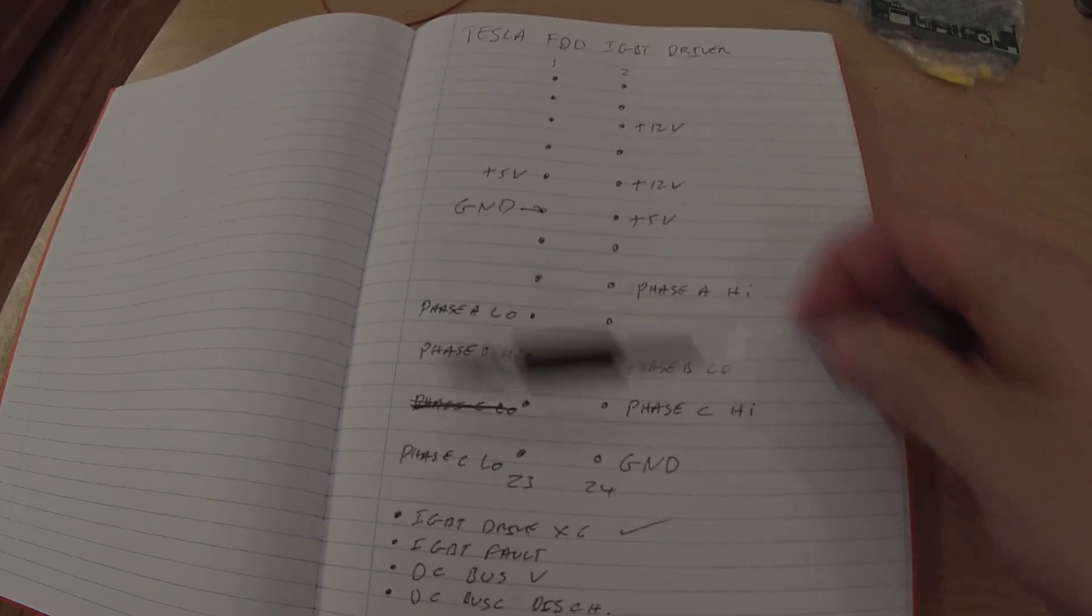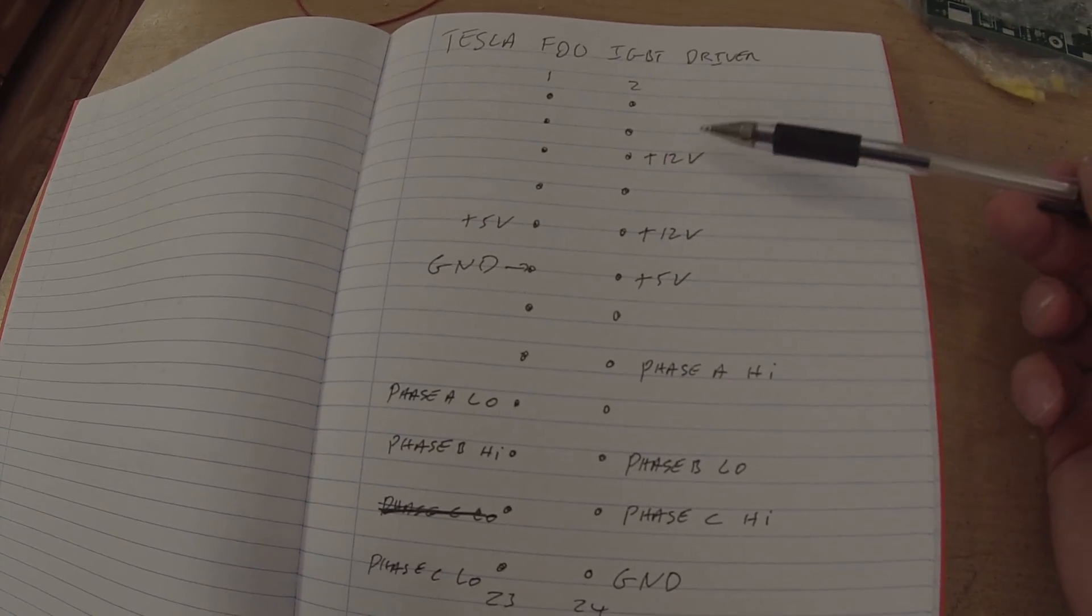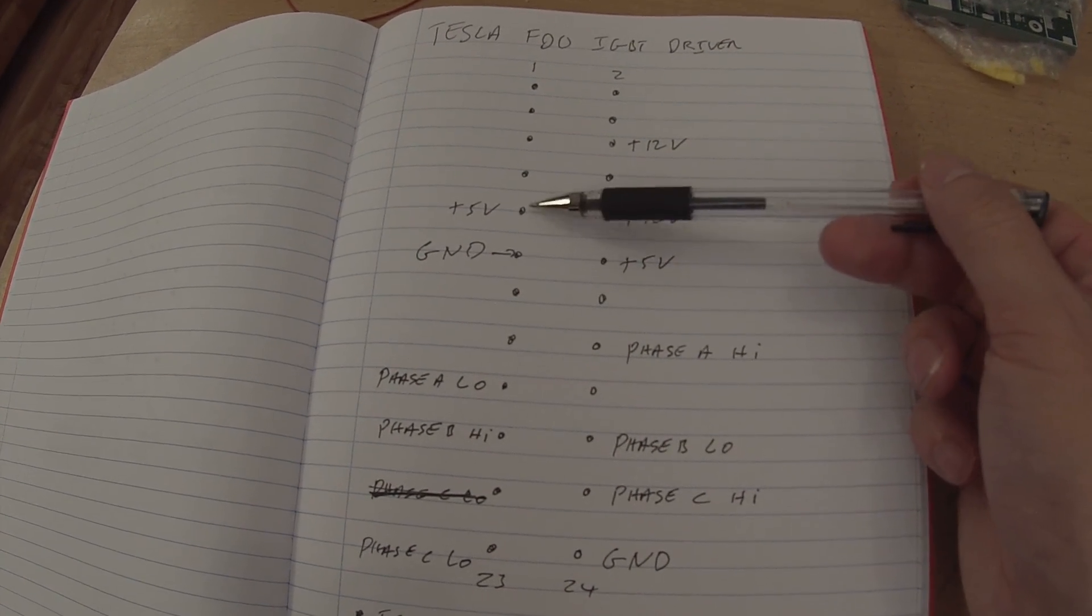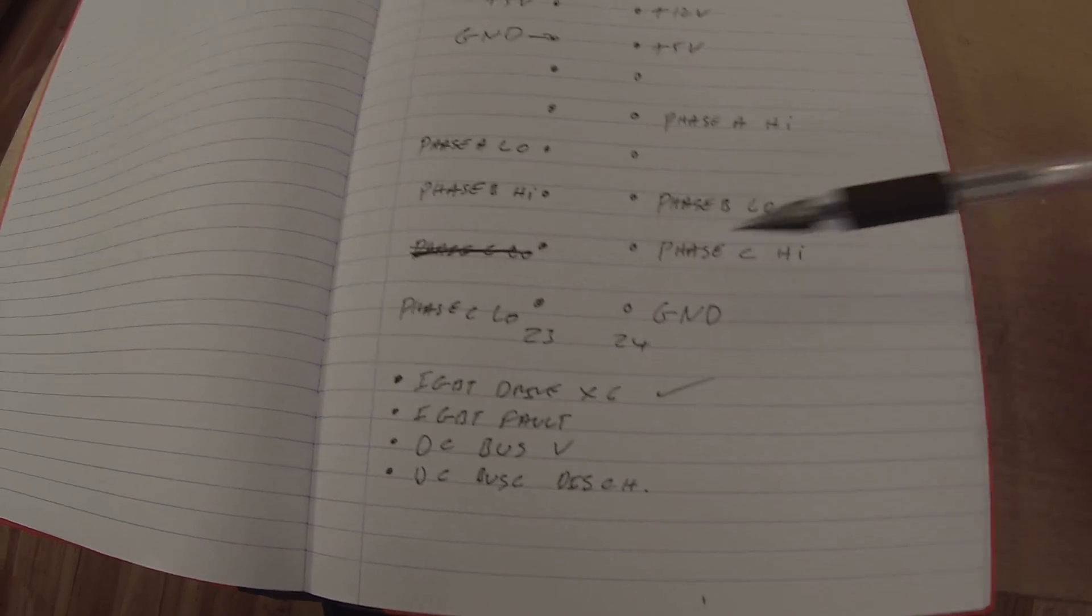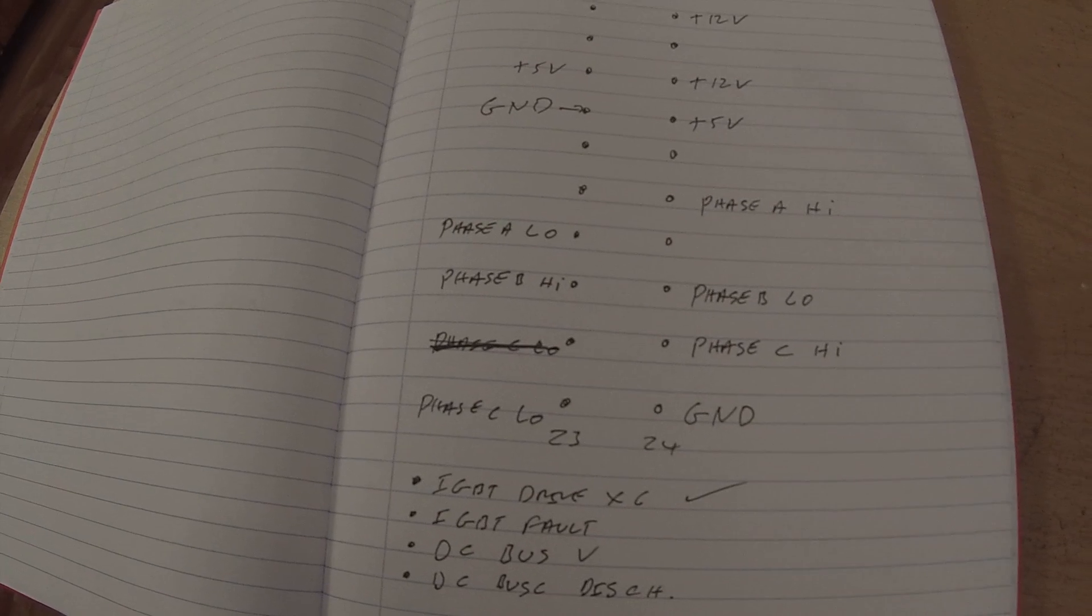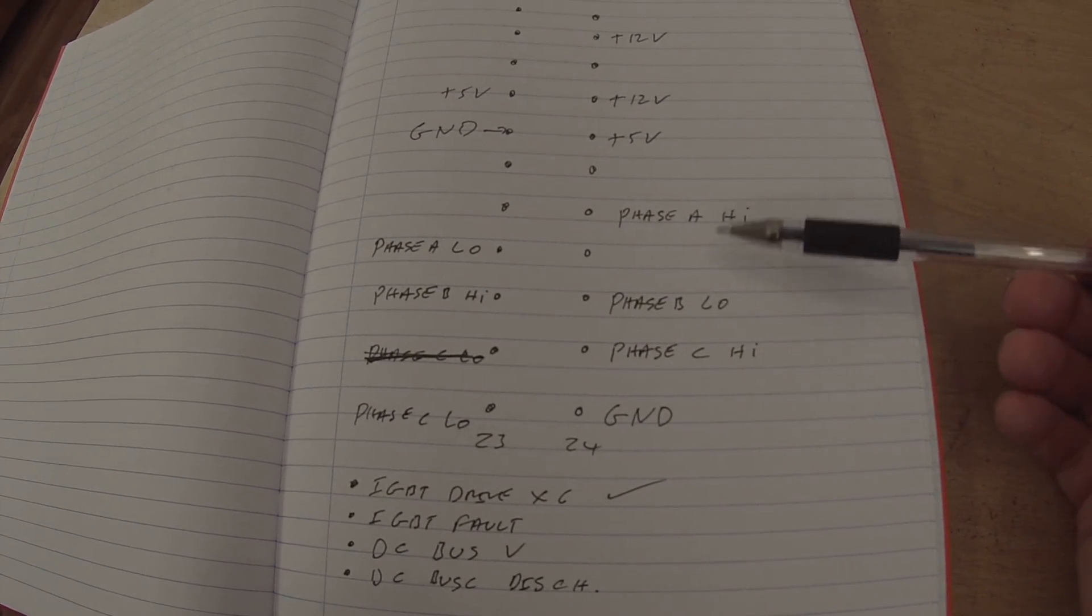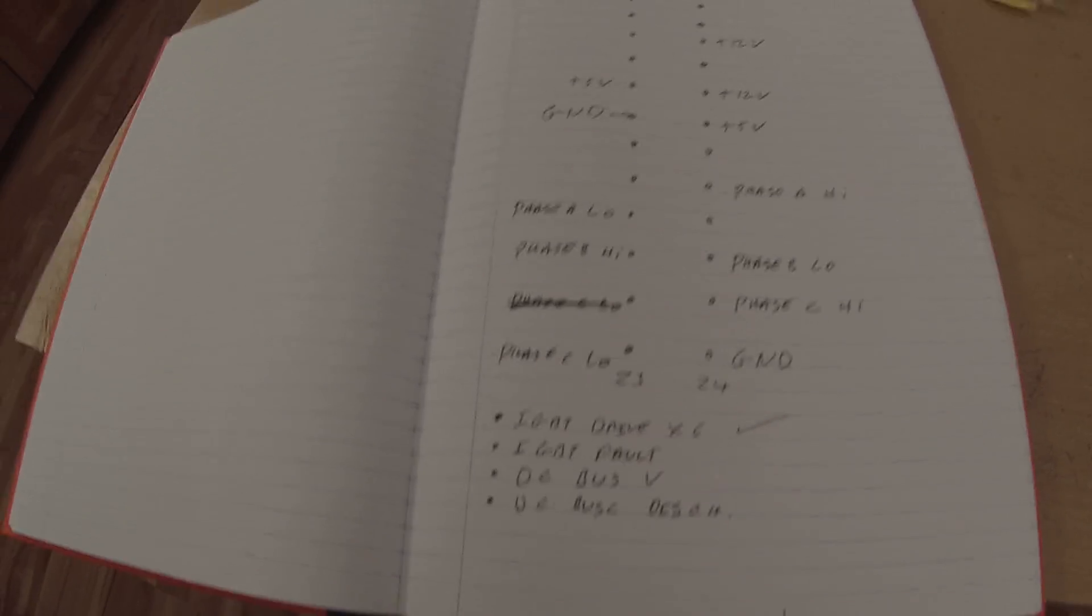For example, here we see that we have two pins that supply 12 volts, two pins that supply 5 volts, and we have two pins that provide ground from the logic board to the IGBT drivers. We've identified our one, two, three, four, five, and six IGBT driver signals.